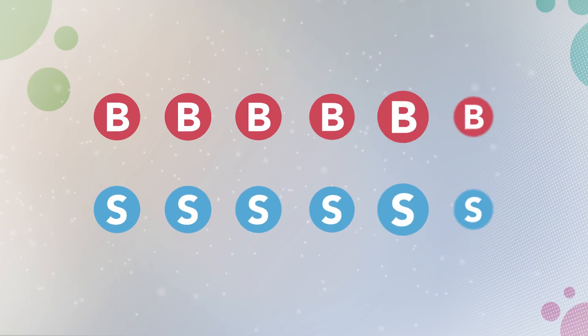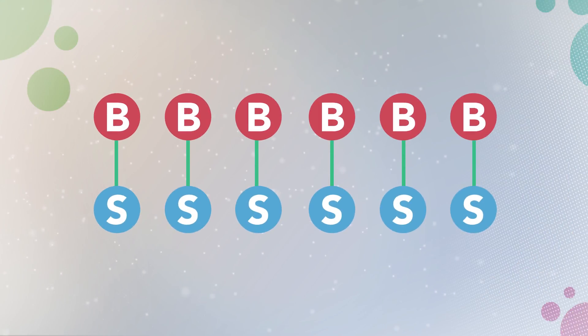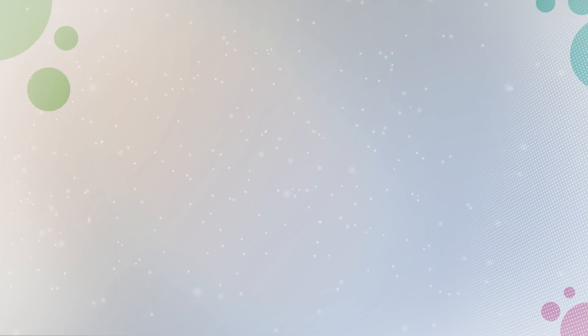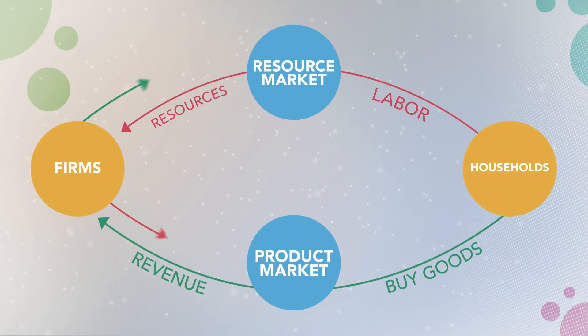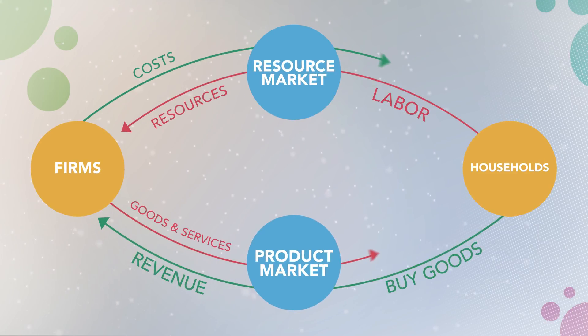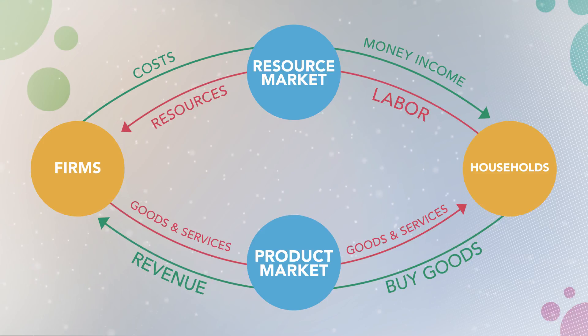Most of us are familiar with the basic operations of markets, where buyers and sellers come together to make voluntary exchanges. Households provide labor inputs and buy goods with their earnings. Firms provide products and services in exchange for payments. This is described using a circular flow diagram of the economy.